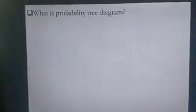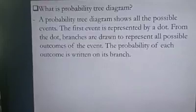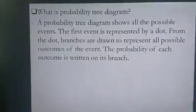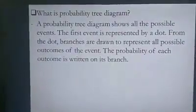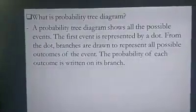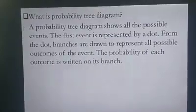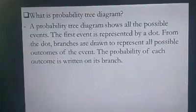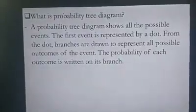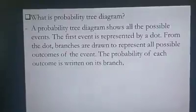Let's begin with a new topic: the probability tree diagram. We know probability has some outcomes we need to represent. If we show it in a tree shape — that means from one branch it spreads to other branches — then it is called a tree diagram. A probability tree diagram shows all the possible events. The first event is represented by a dot, from which branches are drawn to represent all possible outcomes, and the probability of each outcome is written on its branch.